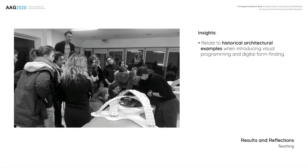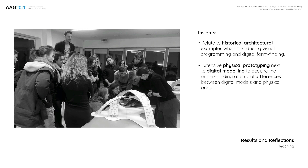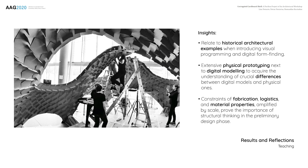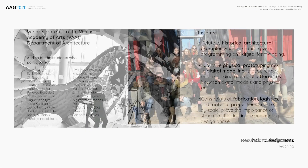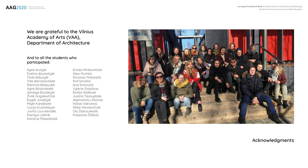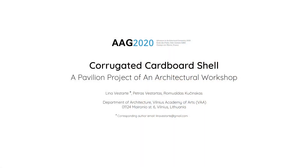In terms of teaching, one of the key takeaways would be the importance of relating to real tangible examples when introducing digital tools — in this instance, historical architectural examples of form-finding. Another crucial aspect is extensive physical prototyping to acquire understanding of the main differences between digital and physical models. Although the prototyping phase was very much enjoyed by the students, building a larger structure — a pavilion — proved to be a better lesson, solidifying the importance of structural thinking in the preliminary design phase. We are grateful to the Vilnius Academy of Arts Department of Architecture for hosting the workshops, and to all the students who participated. Thank you for your attention.